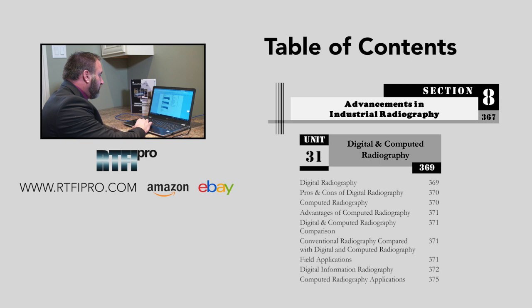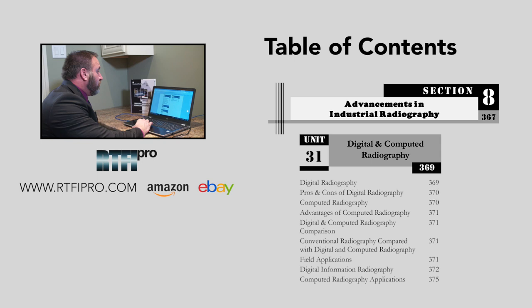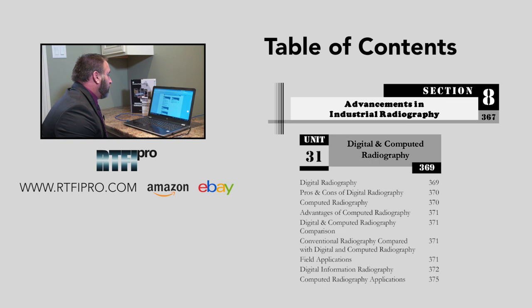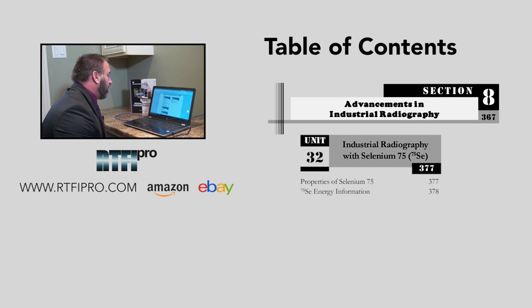Section eight covers advancements in industrial radiography — lots of advancements over the last decade with more in the works. Unit thirty-one covers digital and computed radiography: digital radiography, pros and cons of digital radiography, computed radiography, advantages of computed radiography, digital and computed radiography comparison, conventional radiography compared with digital and computed radiography, field applications, digital information radiography, and computed radiography applications.